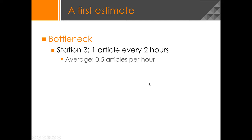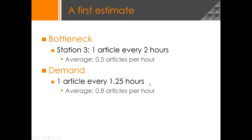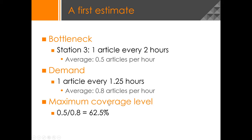In addition to that, we know that the demand is one article every 0.25 hours, which means an average of 0.8 articles per hour. So we can do a simple calculation and find that we will have a maximum coverage level of 0.5 divided by 0.8, which is 62.5% of MEP demand.